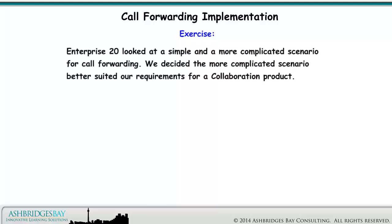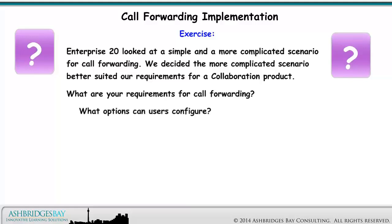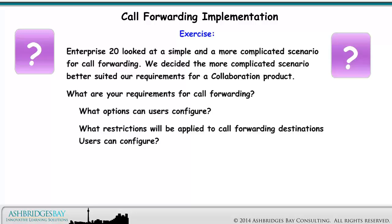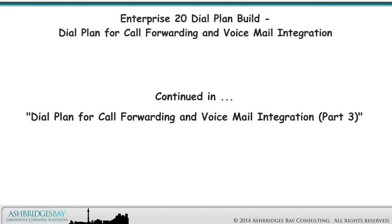Enterprise 20 looked at a simple and more complicated scenario for call forwarding. We decided the more complicated scenario better suited our requirements for a collaboration product. What are your requirements for call forwarding? What options can users configure? What restrictions will be applied? What destinations do administrators have to configure? What are you going to tell your users? This drawing is continued in Dial Plan for Call Forwarding and Voicemail Integration, Part 3, which discusses AAR and CFIR. Stay tuned!